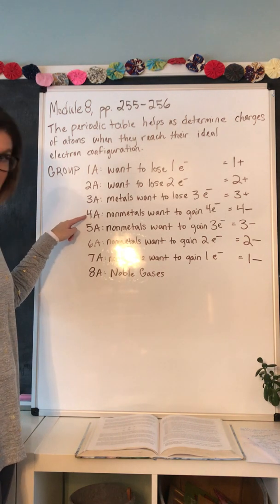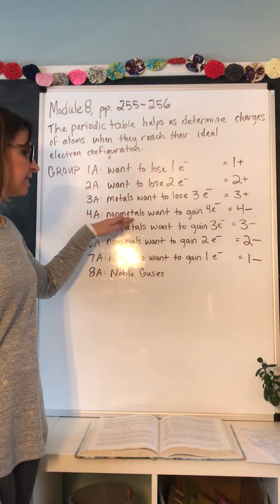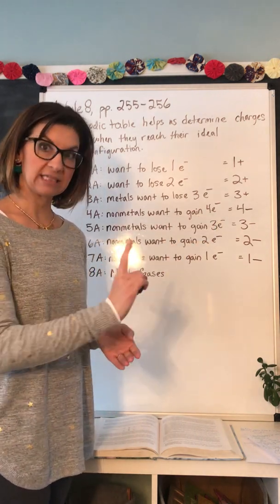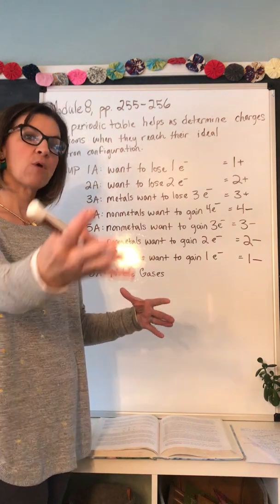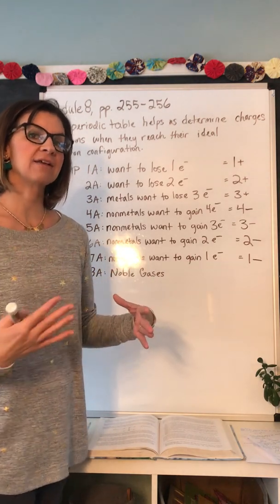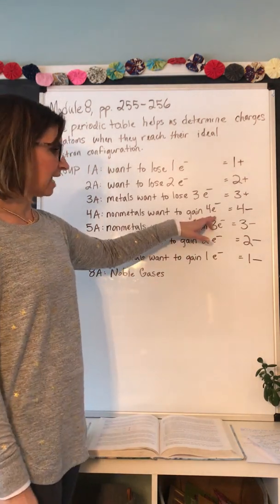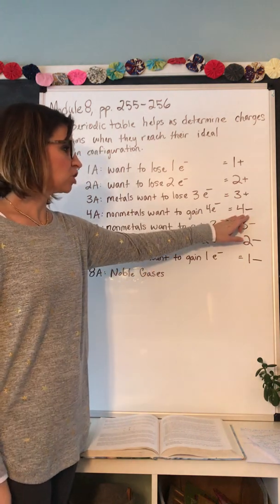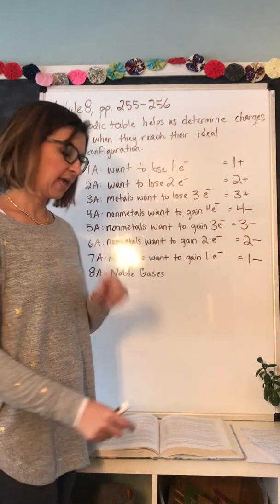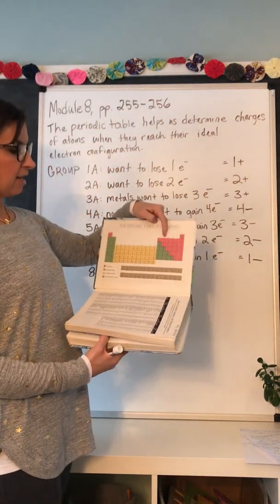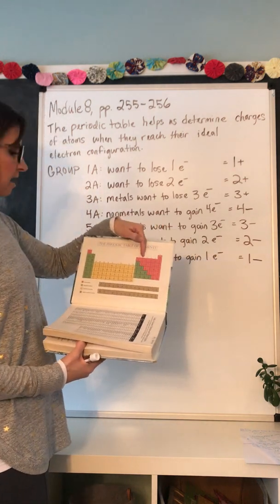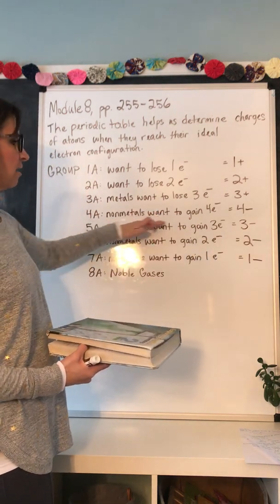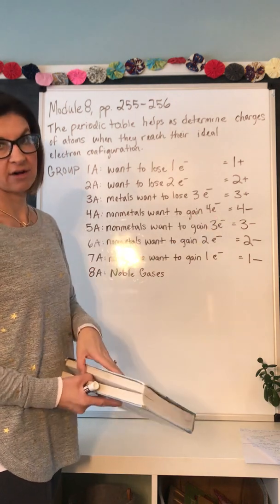In group 4A we switch from talking about metals to talking about non-metals. The non-metals in group 4A want to gain four electrons — they have four valence electrons in their outermost orbital and want to add four more to get a complete set of eight. Once they gain four electrons, they'll have four more electrons than protons, leaving them with an overall charge of 4-. The non-metals here are carbon and silicon.